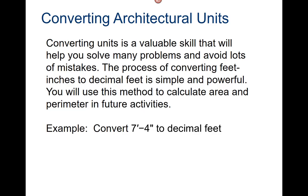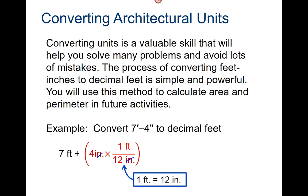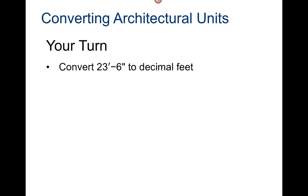Now, converting architectural units. Converting units is a valuable skill that will help you solve many problems and avoid lots of mistakes. The process of converting feet and inches to decimal feet is simple and powerful. You will use this method to calculate area and perimeter in future activities. For example, convert seven feet four inches to decimal feet. If I divide four by twelve, I get .333 feet. The decimal measurement would be seven point three-three-three feet.